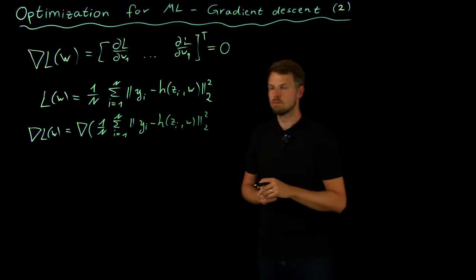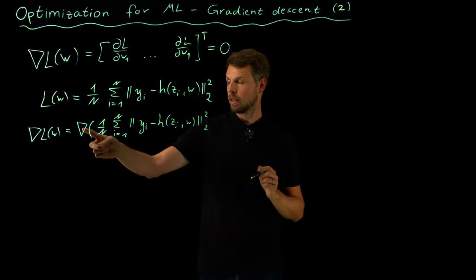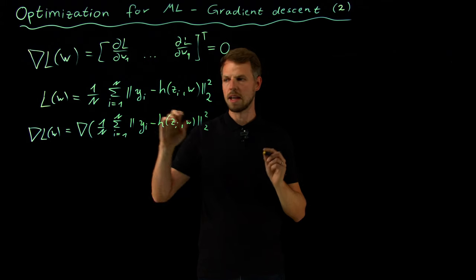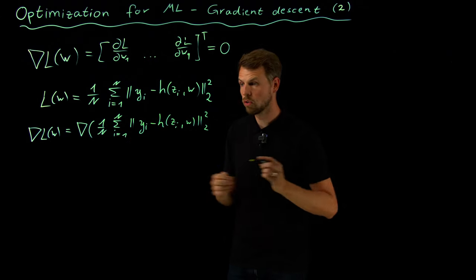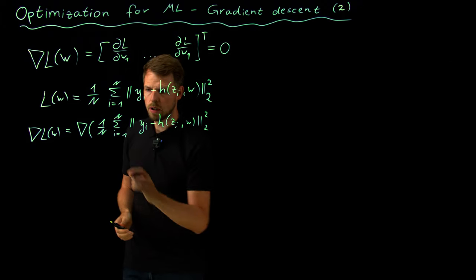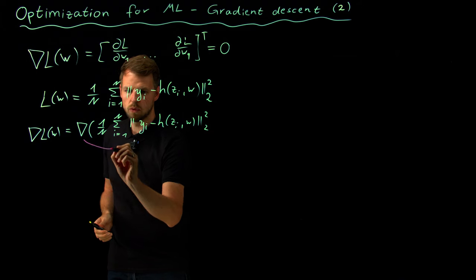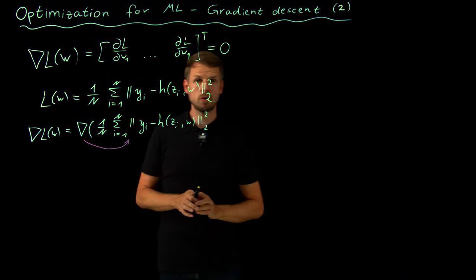This is not particularly useful to us, but what we can look at is that taking derivatives is a linear operation and taking sums is also a linear operation. So we can swap these two things and move the gradient in here.